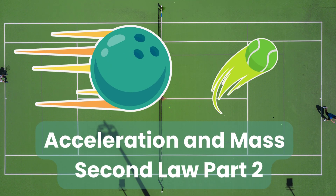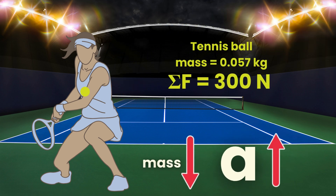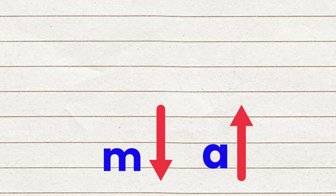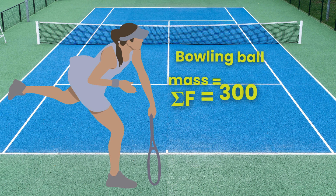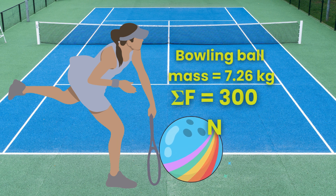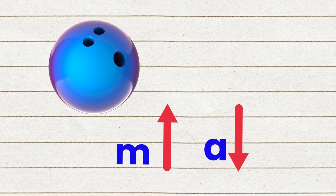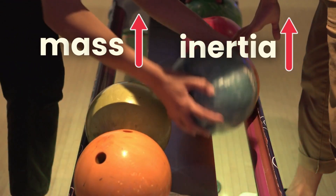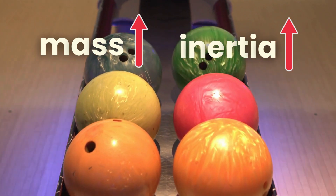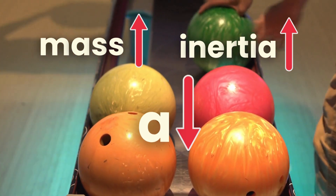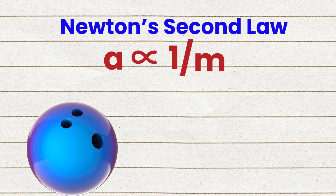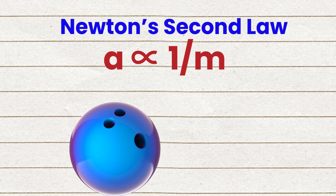Acceleration and mass — Newton's second law, part 2. Ion applies a net force of 300 newtons to a tennis ball, causing it to accelerate quickly. However, when she applies the same 300 newton force to a bowling ball, the acceleration is much smaller. This is because the bowling ball has a much greater mass, meaning it has more inertia, which resists changes in motion, making it harder to accelerate. So acceleration is inversely proportional to mass.